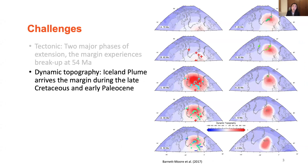Apart from tectonics, dynamic topography also plays a potential role, as it influences elevation and thus sedimentation. Here's showing a Balmer TEL 2017 dynamic topography model, with red indicating the plume. We can see the Iceland plume arrives in the area at 60 Ma, migrates basinward through time, and resides under Iceland in the present day.